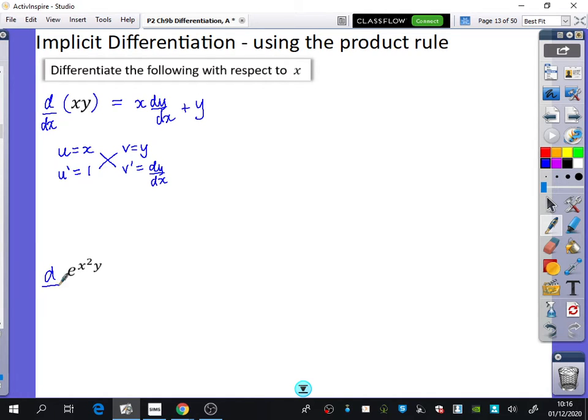So we're going to try and do this one down here as well. We're going to try and differentiate with respect to x, e to the x squared y. So we're going to have u is e to the x squared and v. Oh no, let's not do that just yet because there's going to be a product rule involved in this. But I didn't really see that. The y is actually a part of the power.